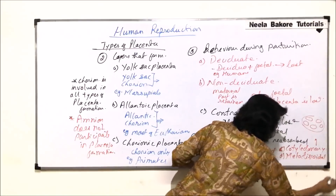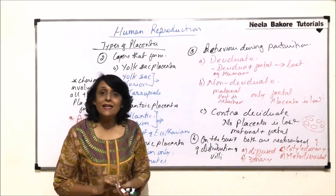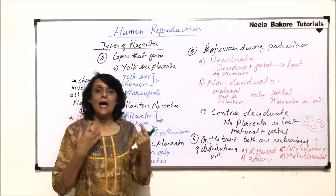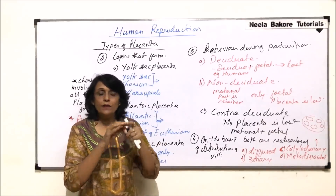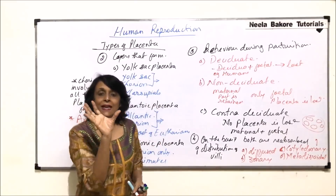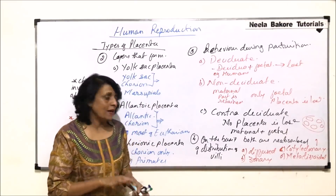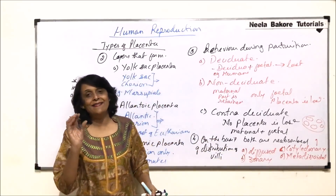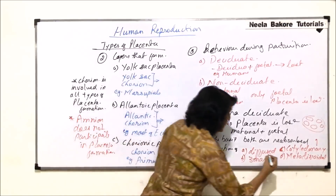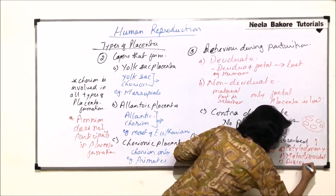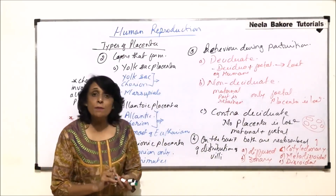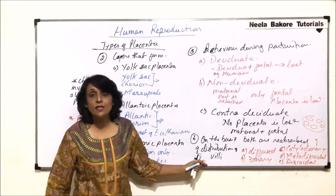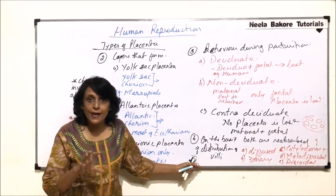The fourth type is metadiscoidal, which is found in humans. In metadiscoidal, when the embryo is first embedded in the endometrial lining, the villi are all over. Later, the villi are lost from all other areas and remain confined to one disc-like part — hence the name metadiscoidal. The fifth type is discoidal, where the villi are from the very beginning arranged in a circular disc-like pattern.